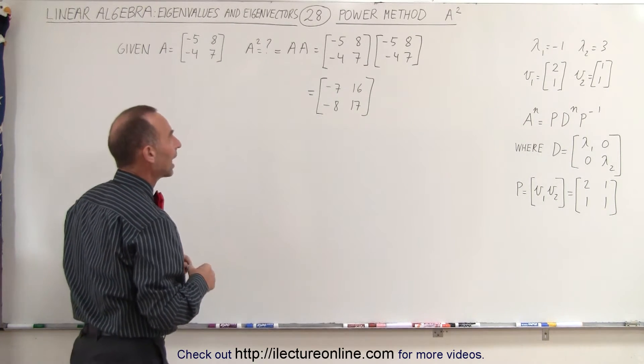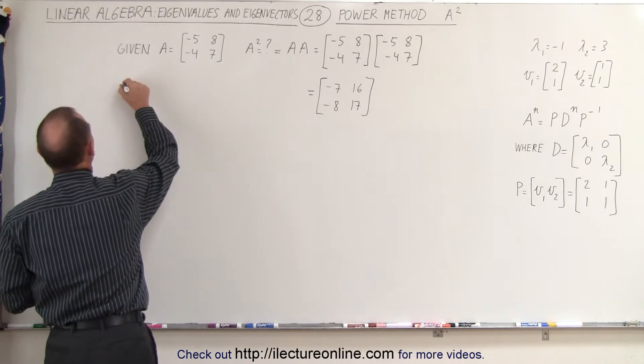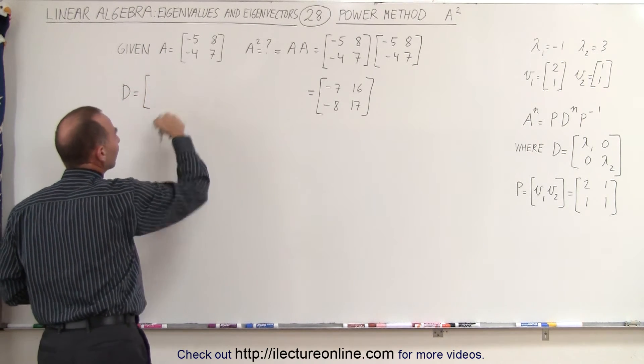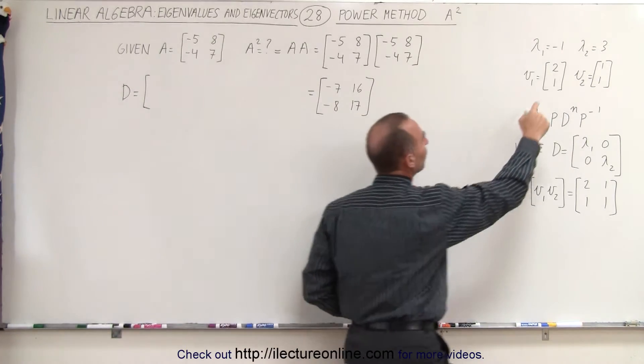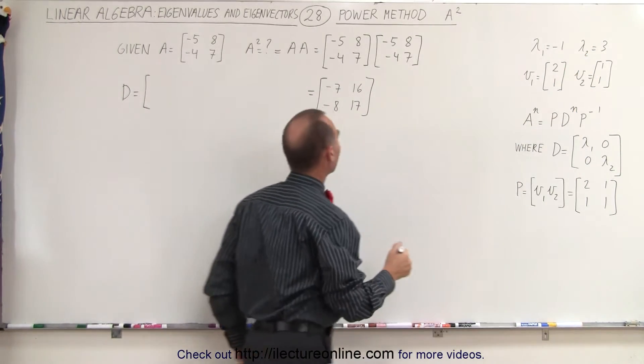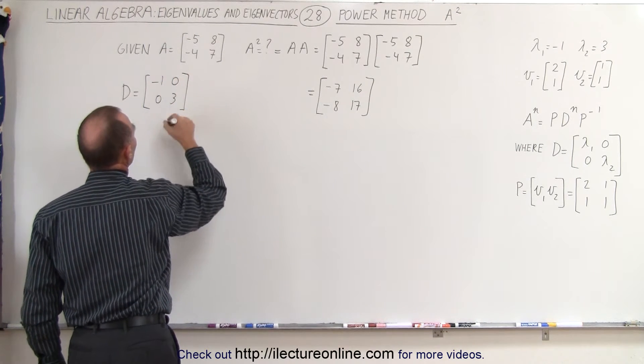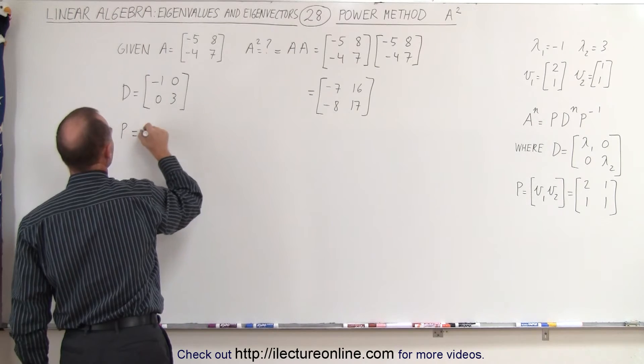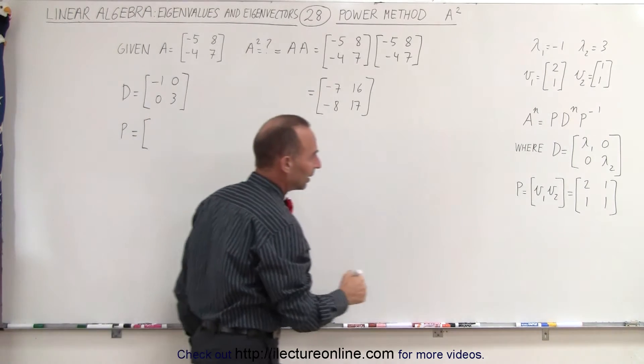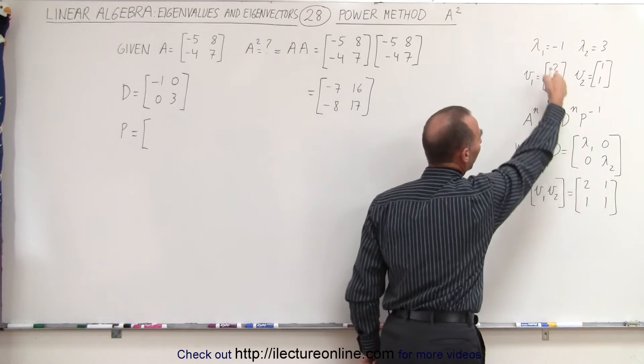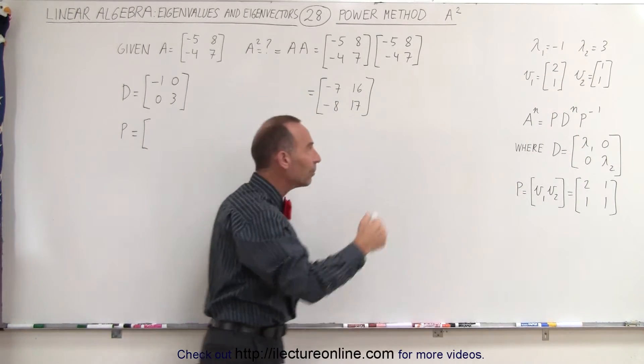First of all, the diagonalization matrix D is equal to, and it's simply going to be the eigenvalues, which we figured out in the previous video. So we have minus 1 and 3, and zeros everywhere else. Then we have the P matrix, and we showed you there already, this is simply a matrix of the eigenvectors, which have to be corresponding to the eigenvalues in the same order.